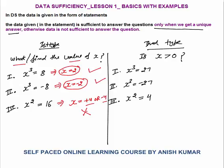We must get a unique answer in order to say the data is sufficient. The second type of question is the 'is' type, which is a bit tricky. For example: 'Is x > 0?' The answer to an 'is' type question will always be in the form of yes or no. If x³ = 27, then x = 3 because 3³ = 27. The question is 'is x > 0?' — the answer is yes, x = 3 which is greater than 0. So this statement is sufficient because we get a unique answer: yes.